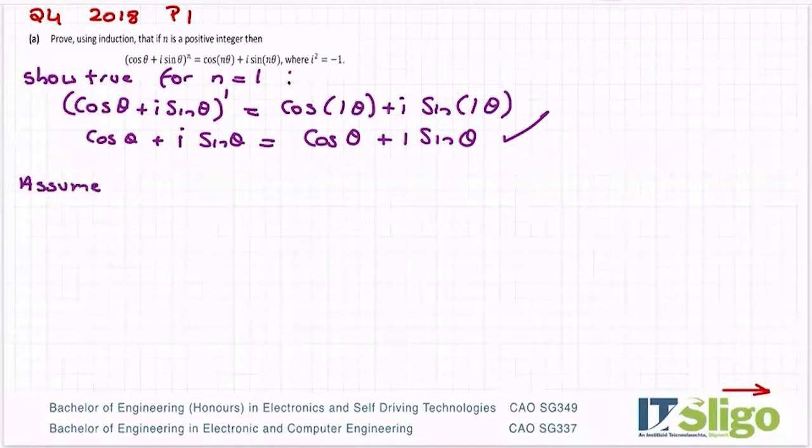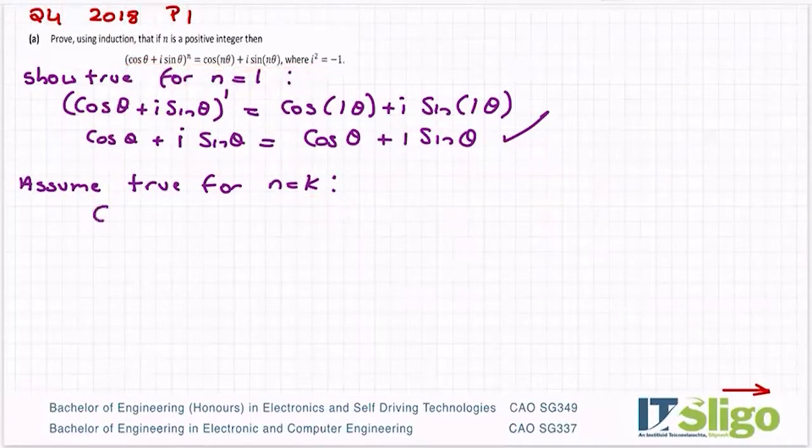Assume true for n is equal to k. So for any random number k, assume that the statement is true.